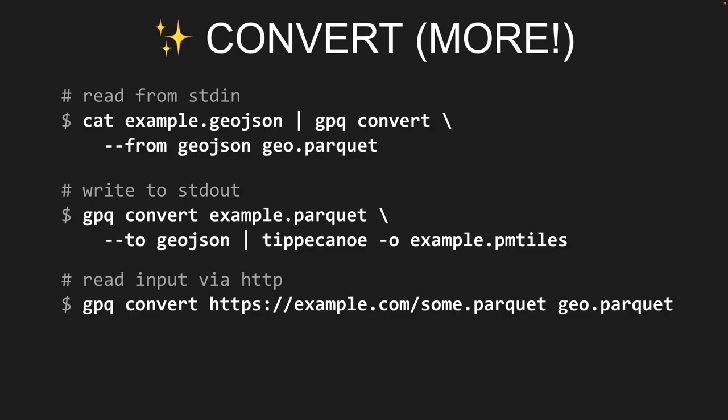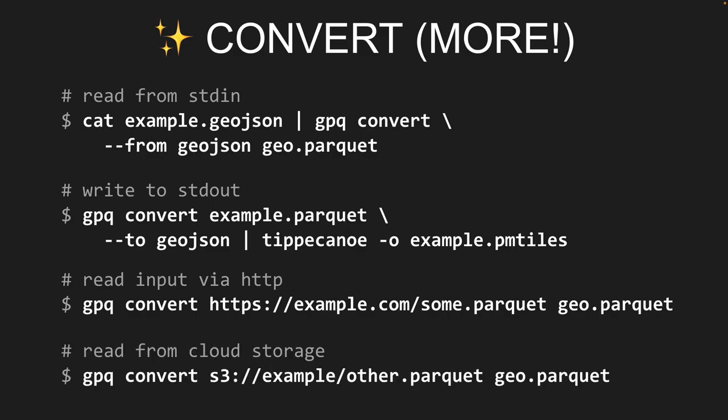You can also do remote reads — wherever there's a source file for any command, you can specify a URL. This could be a source cooperative URL. You can convert a GeoParquet file remotely to GeoJSON locally, or Parquet remotely to GeoParquet locally. In the latest release, there's support for reading from cloud storage — S3, Azure Blob Storage, and Google Cloud Storage.